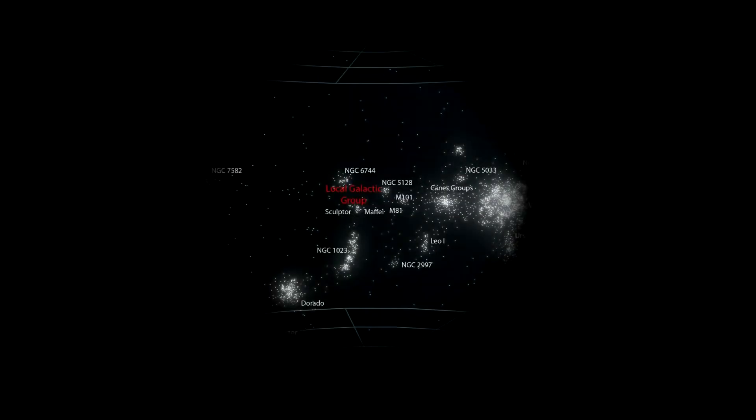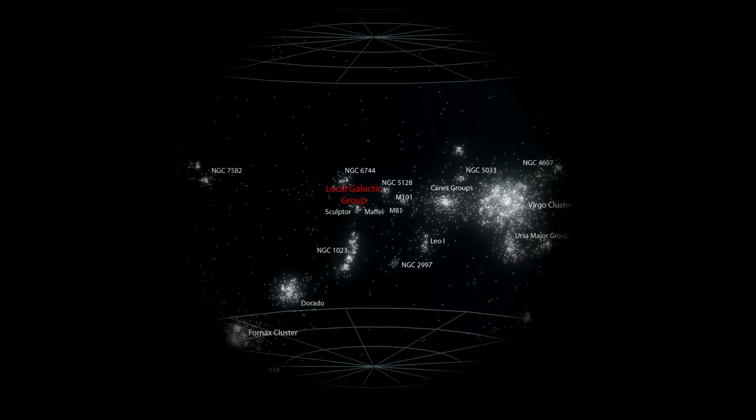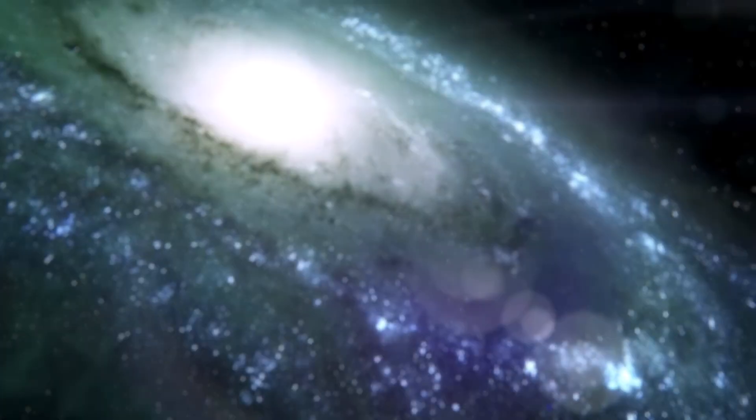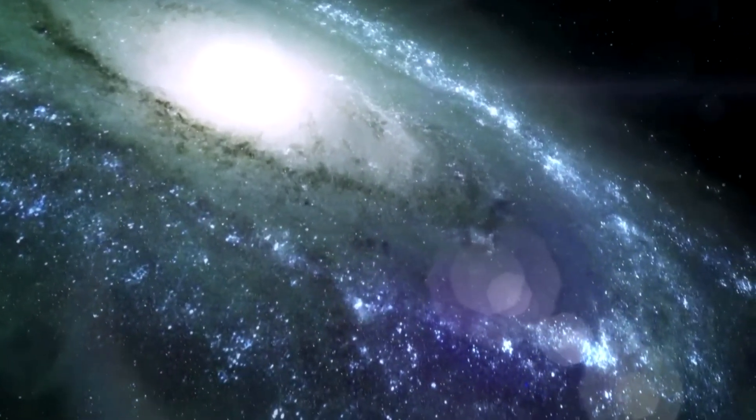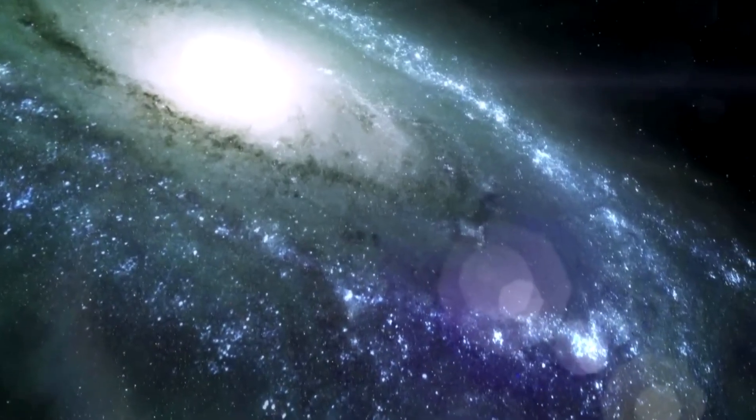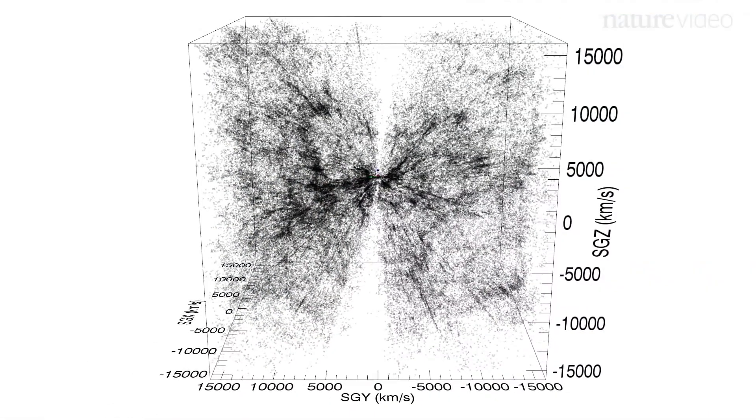Because when we were finally able to glimpse what lay beyond the zone of avoidance, we realized that the Virgo supercluster, which contains about 45,000 individual galaxies, was just one branch of a much larger structure, the Laniakea supercluster.